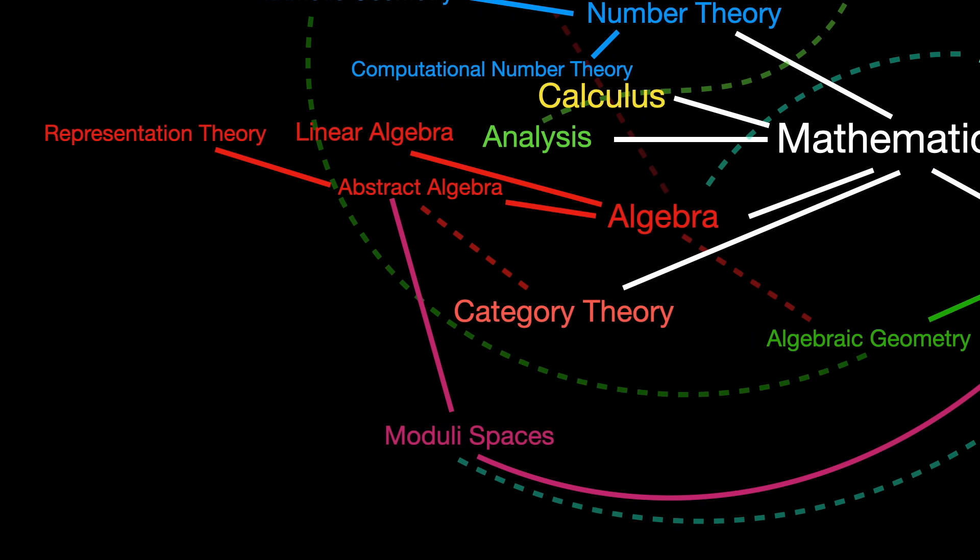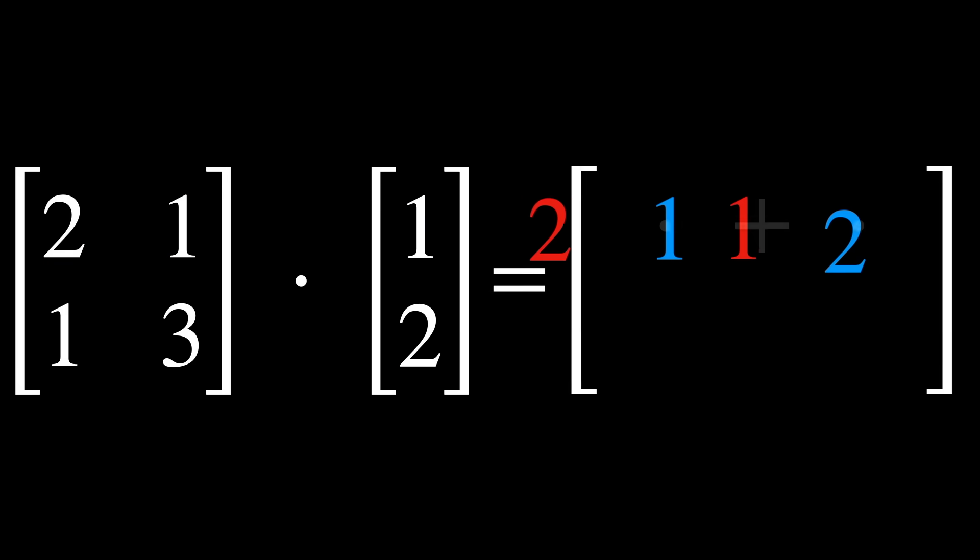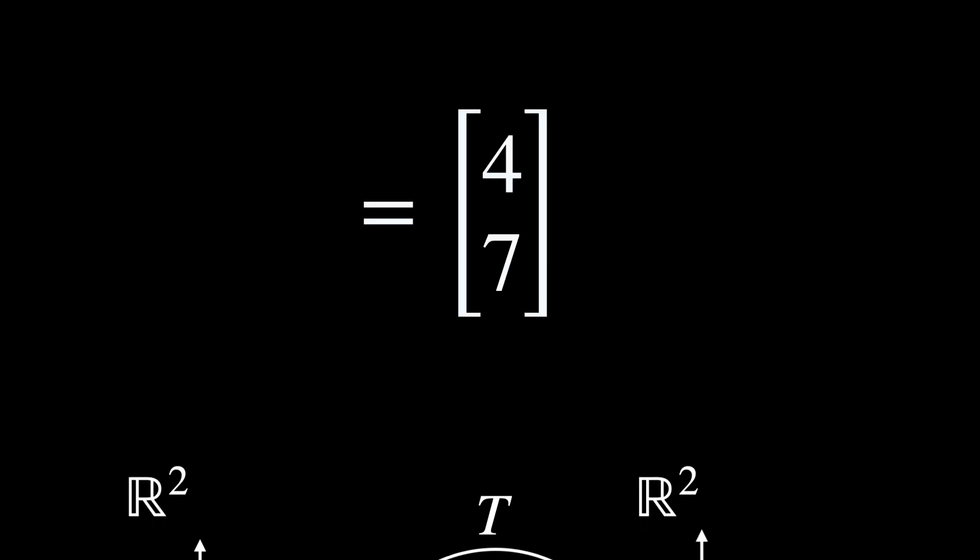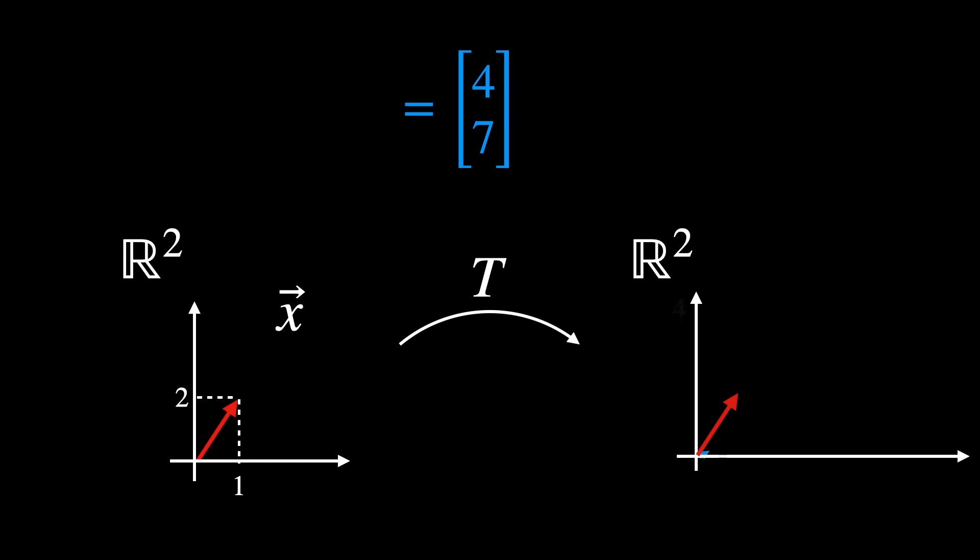Representation Theory. The main idea in representation theory is to associate each element of a group with a matrix, such that the group's operation corresponds to matrix multiplication. This lets complex group structures to be studied using linear algebra techniques. A really important part of representation theory involves the study of how these matrices act on vector spaces. This reveals quite a bit about the group's structure through the properties of these actions, like whether they preserve the vector space structure.